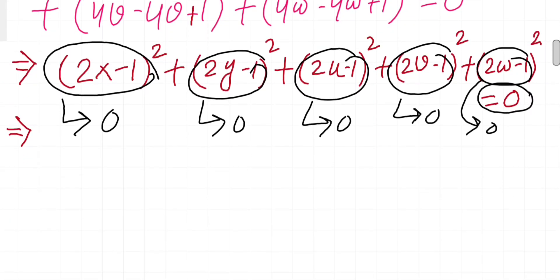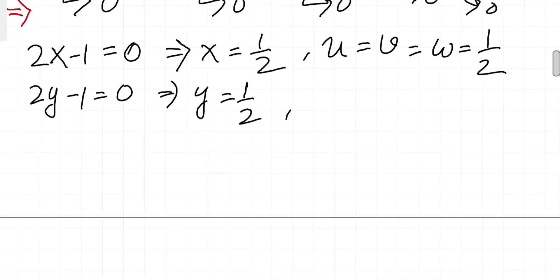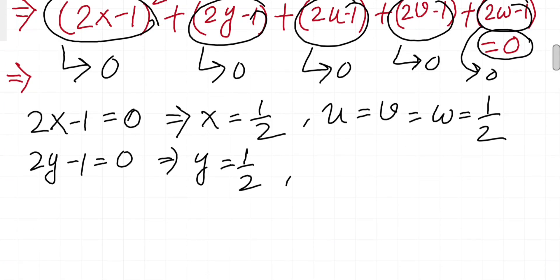So equating them, 2x - 1 = 0, therefore x = 1/2. Similarly, they are all 1/2. This is the only solution to this equation where all variables equal 1/2. This is our solution.